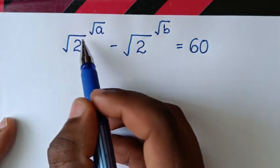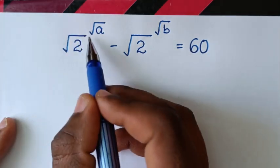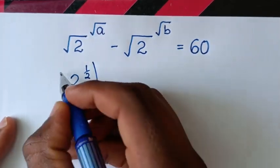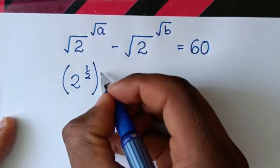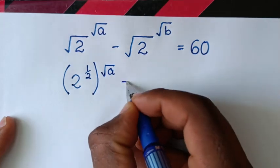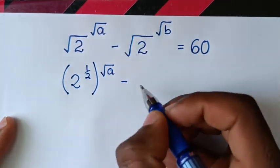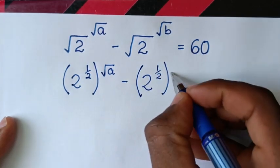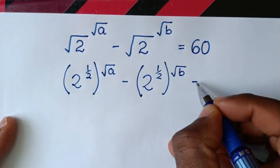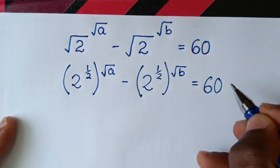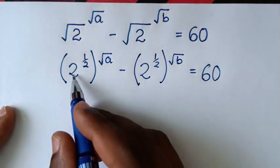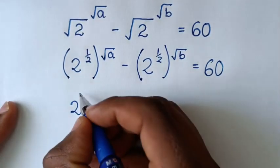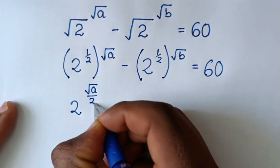In the first step, we'll start by changing this square root of 2 into exponent form. So it will be 2 to the power of one half, then that bracket raised to the power of square root of a, minus 2 to the power of one half raised to the power of square root of b, is equal to 60. Then it will be 2 to the power of square root of a over 2.